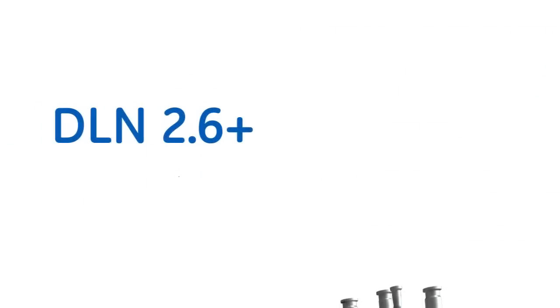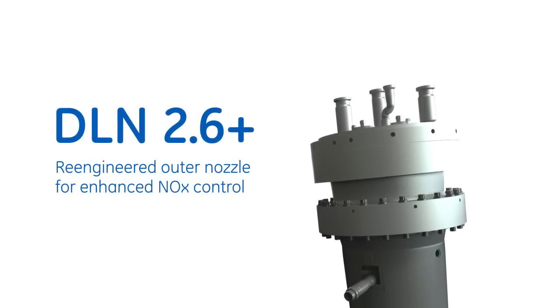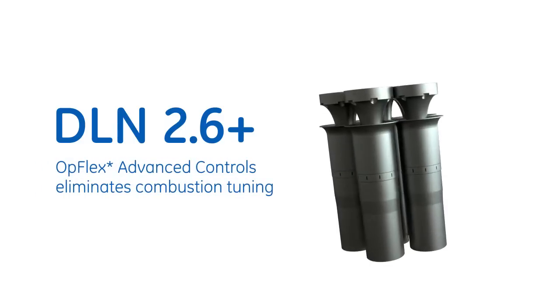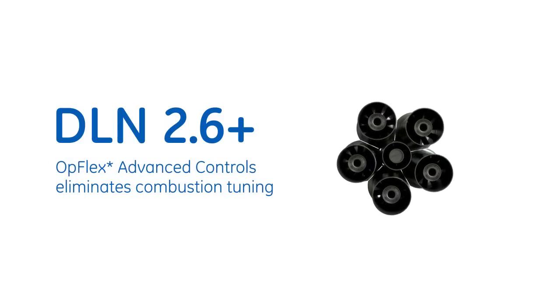The DLN 2.6 Plus features a central premix nozzle and five outer nozzles which have been re-engineered, adding a fuel passage upstream of the nozzle and swirler, and eliminating the diffusion passage.